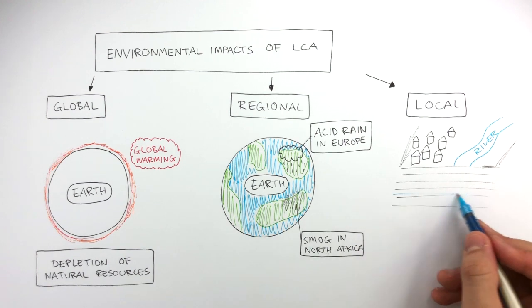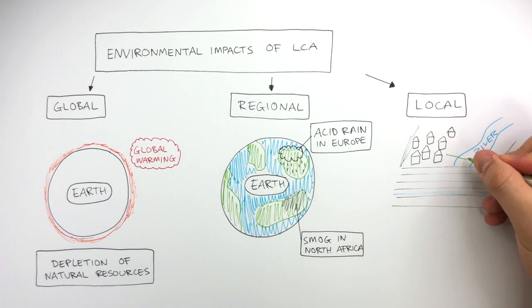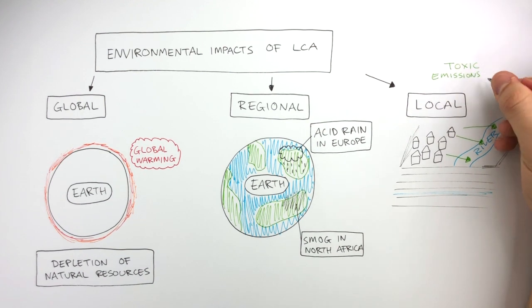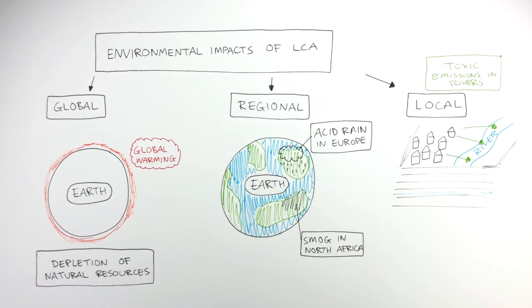Below the ground is groundwater. And these green lines represent how toxic emissions enter into rivers. This is an example of a local environmental impact.